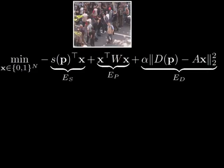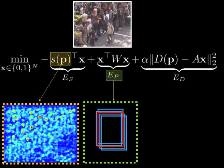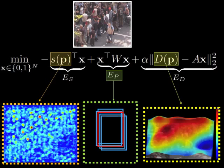The energy function is made up of three main terms: the scores of an object detector, a pairwise term that penalizes overlapping windows, and a new term that incorporates crowd density.